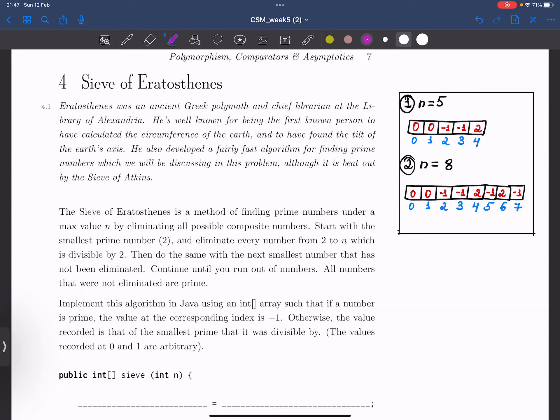We need to implement this algorithm in Java using an integer array, such that if a number is prime, the value at the corresponding index is minus 1. Otherwise, the value recorded is that of the smallest prime number that it was divisible by.